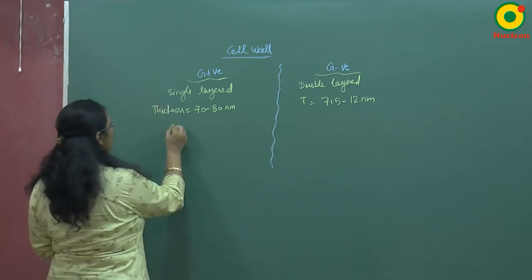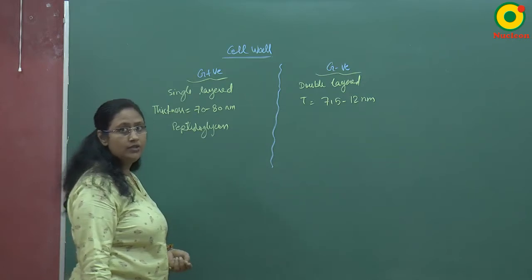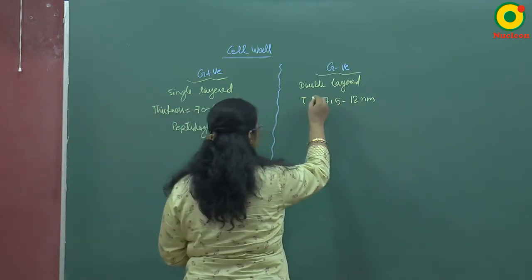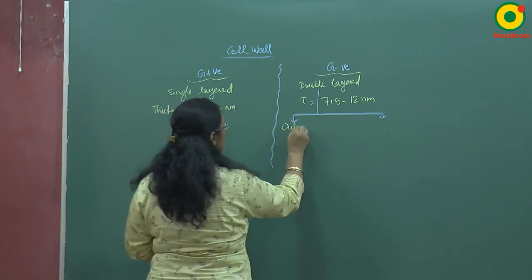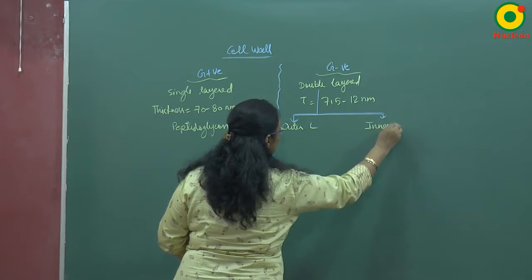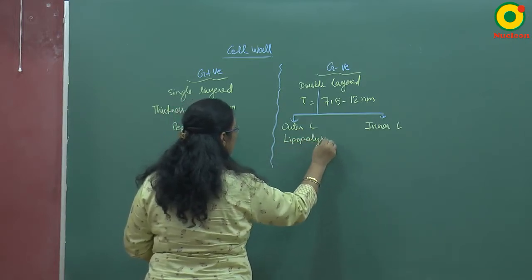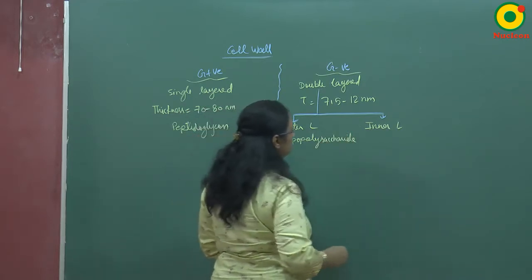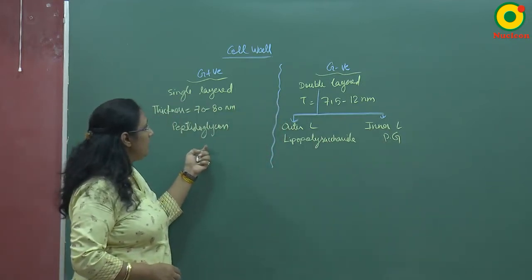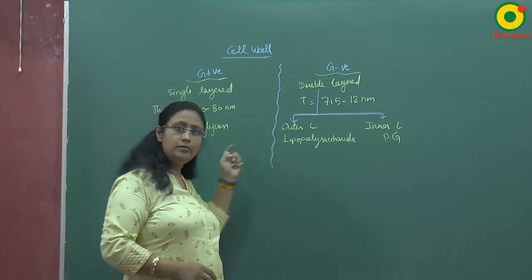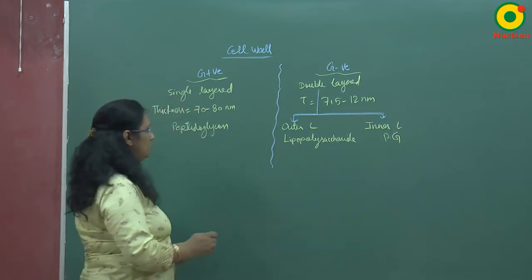In gram positive bacteria, this single layer is made up of peptidoglycan. In gram negative bacteria, the double layer consists of an outer layer made up of lipopolysaccharide and an inner layer made up of peptidoglycan. So the main constituent of the cell wall — peptidoglycan — is common to both gram positive and gram negative bacteria.